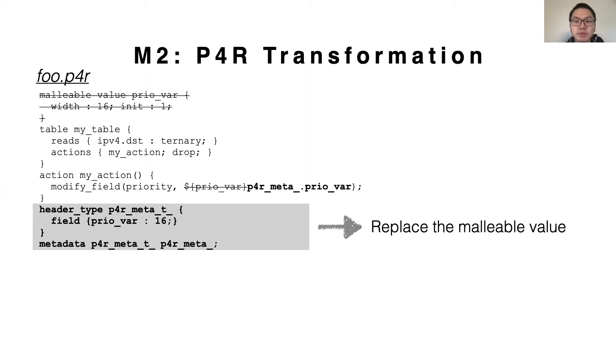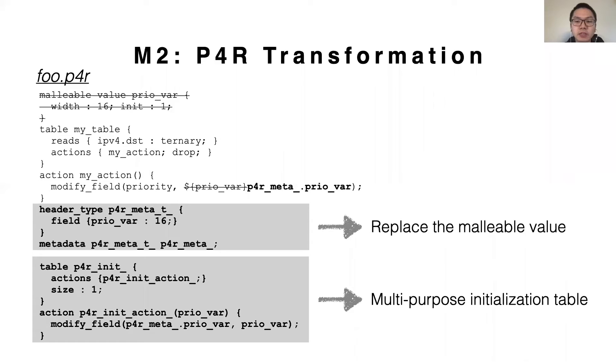That is, without interrupting the data plane and losing states, Mantis can update multiple entities at runtime. Let's look at this concrete example from the previous code snippet. To accomplish this, first, Mantis replaces malleable value P4R with a concrete P4 object called P4R meta. Then, instantiates the P4R init table with actions to set its value. The P4R init table is applied at the beginning of each packet processing pipeline. Configuring this way means that by changing a single table entry, specifically of the P4R init table, Mantis can reconfigure all use of the malleable value in the entire pipeline.